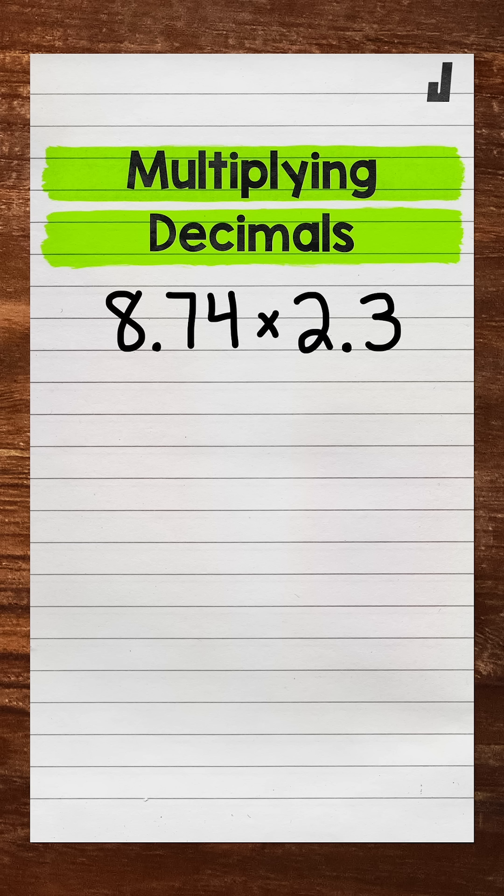Now whenever we have a multiplication problem involving decimals, our first step is to remove any decimals. So let's rewrite this problem without any decimals.